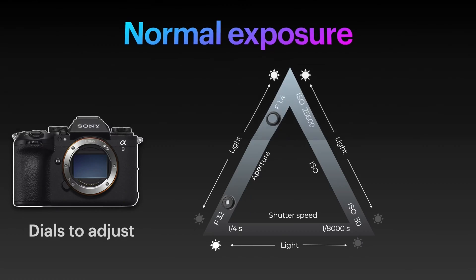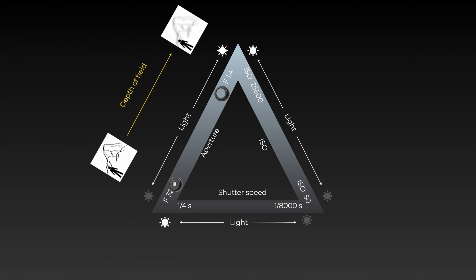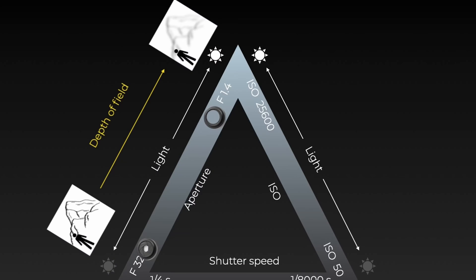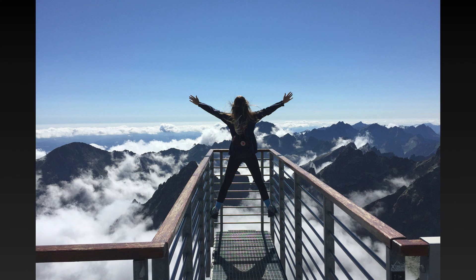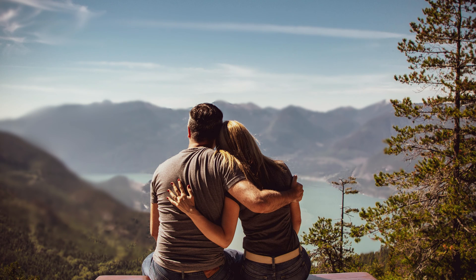It's worth noting that each part of the triangle has more side effects other than just making an image brighter or darker. For example, aperture: having an aperture of f32, which has a small hole, might make the image darker but also gives us a larger depth of field, meaning the person nearest to the camera and the landscape behind them are both in focus. Conversely, if we set the aperture to f1.4, which is a very large hole, we get a shallow depth of field — only the person is in focus and the landscape behind them is blurred out, known as bokeh.